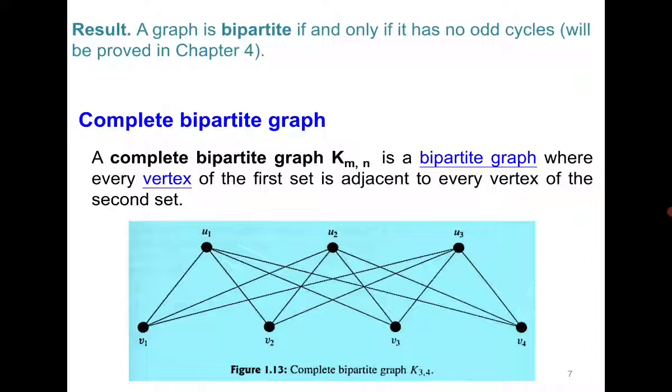Right now we have discussed the following notations: Null graph is Nn, path graph Pn which is a simple graph, then cycle graph Cn, complete graph Kn, and complete bipartite graph Kmn. Please do remember these notations.